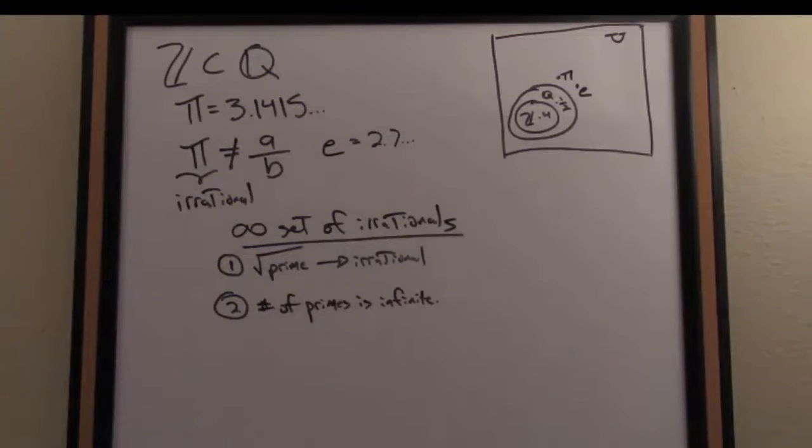Number 2 is that the number of primes is infinite. Now a prime, just to remind you, is a whole number greater than or equal to 2, whose only divisors are 1 and itself. So the square root of a prime is irrational, and the number of primes is infinite. Now this is not necessarily obvious. In fact, I'm including a little bonus lecture where I prove, a la Euclid, that there are an infinite number of primes. If you put these two together, you can show that there's an infinite set of irrationals.